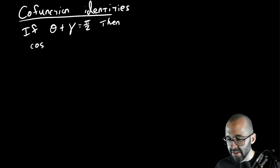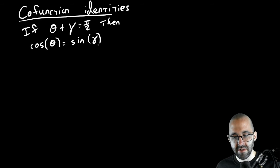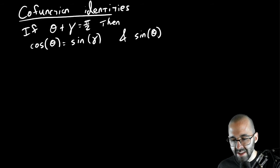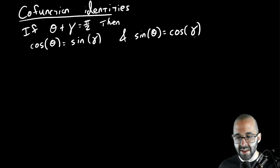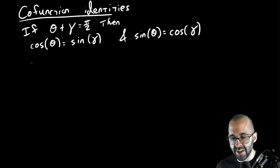The cosine of theta is equal to the sine of gamma, and the sine of theta is equal to the cosine of gamma. And you can do the same thing with all these trig functions.